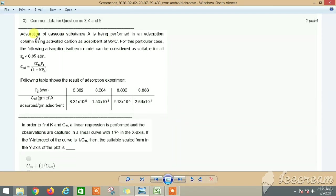Adsorption of gaseous substance is being performed in an adsorption column using activated carbon as adsorbent at 95 degrees Celsius. For this particular case, the following adsorption isotherm model can be considered as suitable for all P_g (pressure gauge) less than 0.05 atm. So here we have the adsorption isotherm equation.